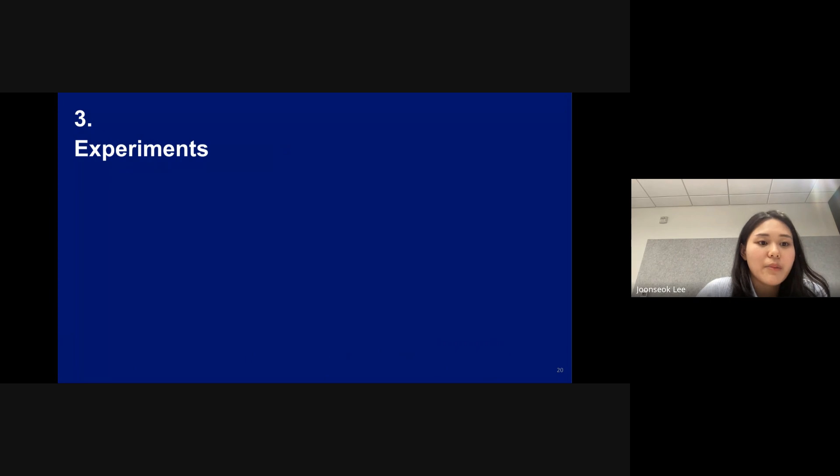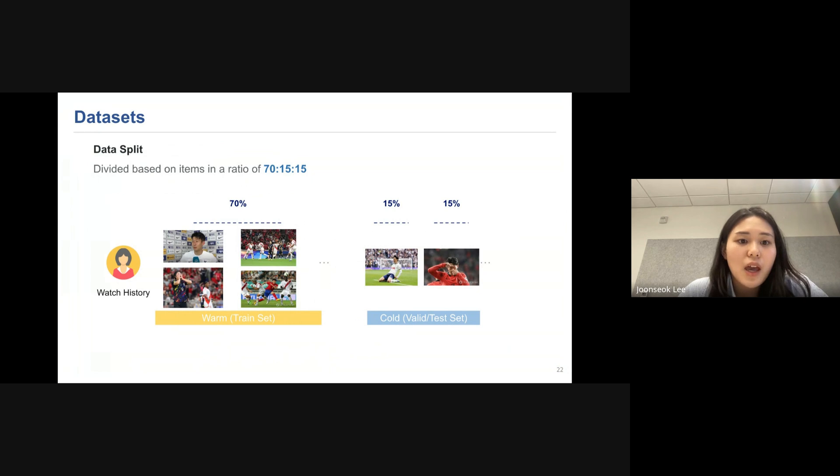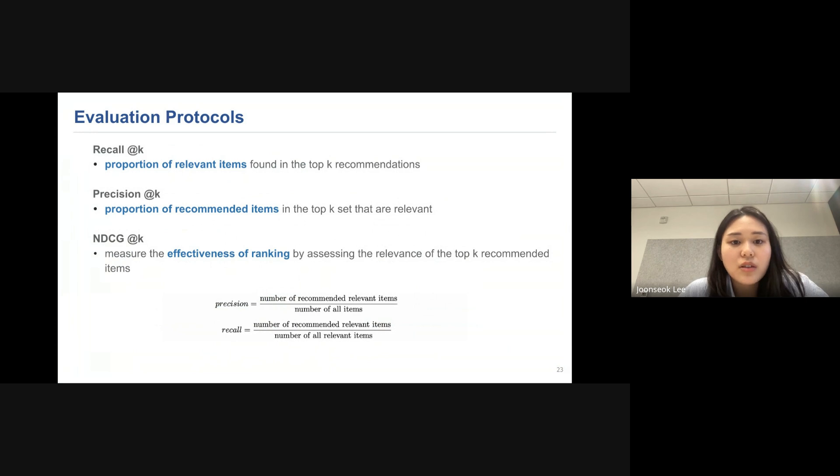And next, I'll talk about the experiments. So for datasets, we use real-world video datasets, which are TikTok, MovieLens One Million, and Yahoo Movie. And for content features, we use video, audio, and text. And for modality-specific encoders, we use ViT for video, AST for audio, and BERT for text. And the detailed data statistics of the dataset are shown below in Table 1. And we split the data based on items in a ratio of 70 to 15 to 15. And for evaluation protocol, we use Recall@K, Precision@K, and NDCG@K.